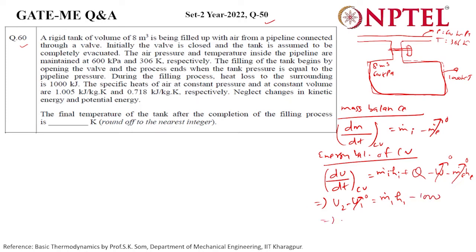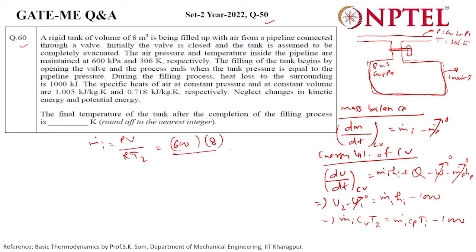So the equation becomes: m_i × c_v × T2 = m_i × c_p × T_i minus 1000. The inlet mass m_i is given by PV/RT2, which is (600 × 8) / (0.287 × T2). We substitute this into the energy equation, with c_v = 0.718 and T2 as the unknown.